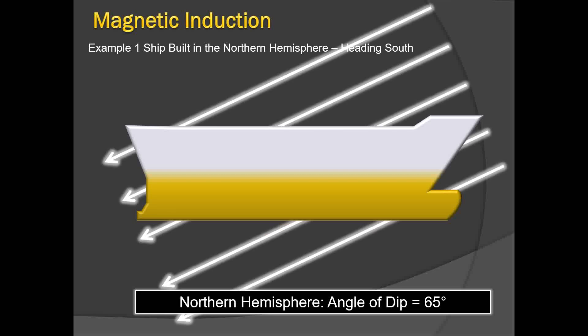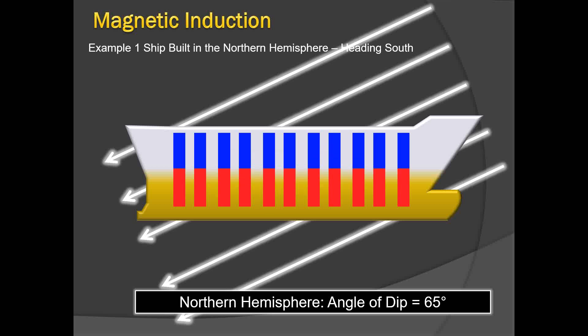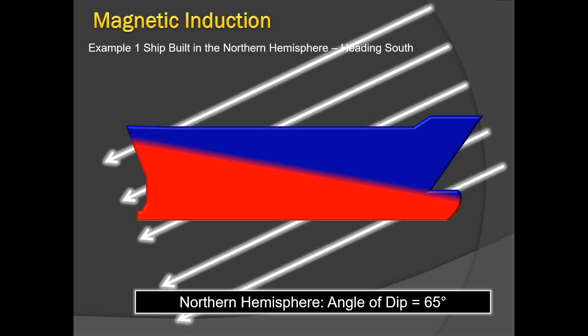Now imagine a ship built in the northern hemisphere with an angle of dip of 65°. This means the magnetic lines of force make an angle of 65° with the horizontal. Because the ship is in the northern hemisphere, the north part of the needle dips downwards. Even though the magnetic lines of force enter the ship at 65°, the red end is downward and the blue end is upward at that angle of 65°.